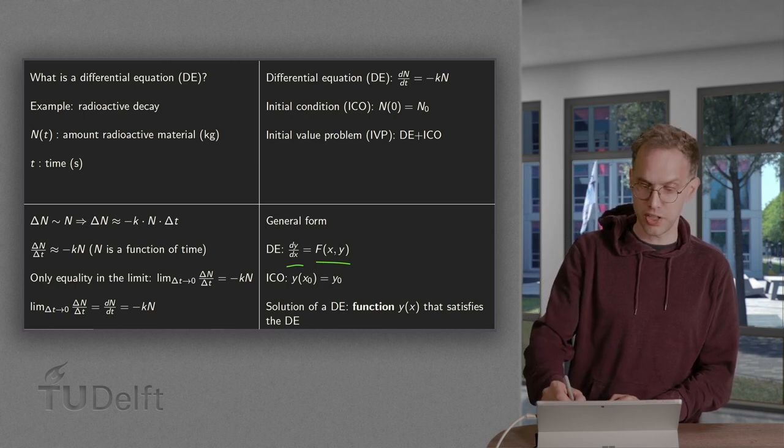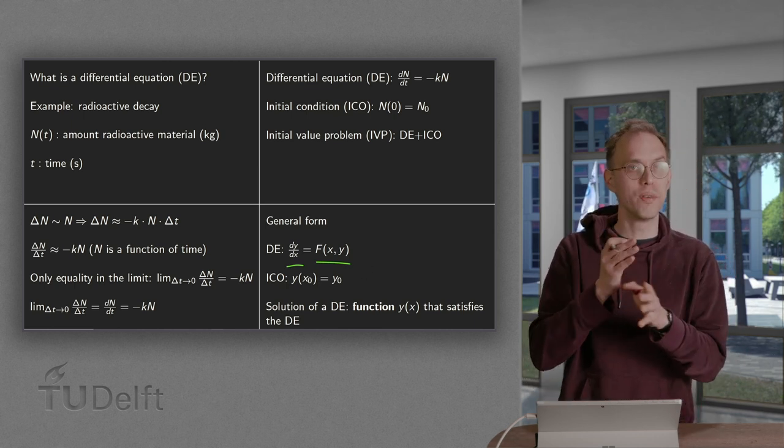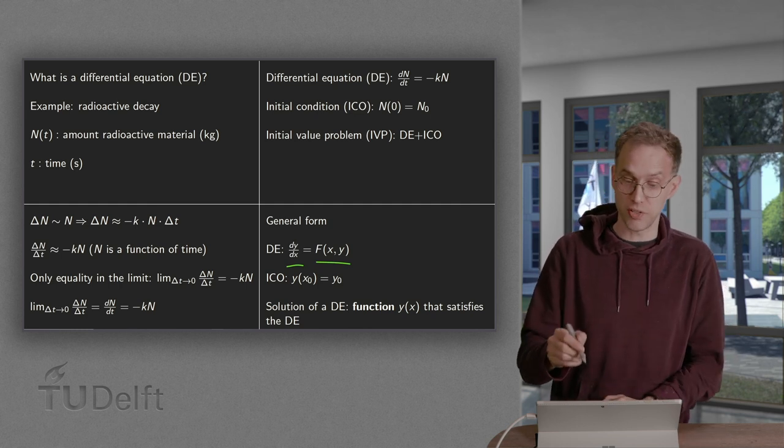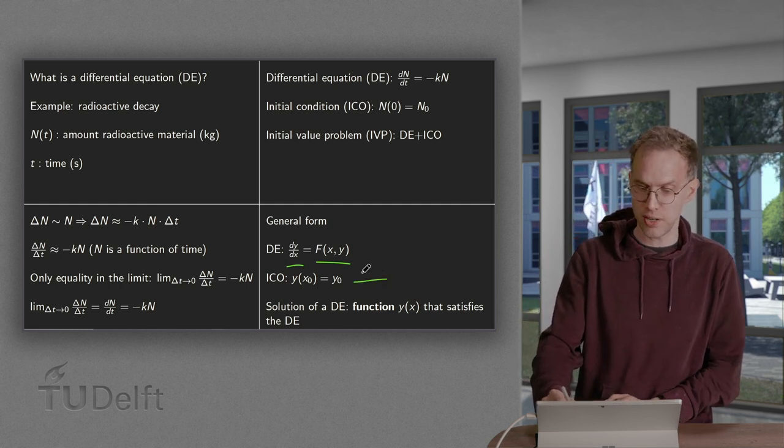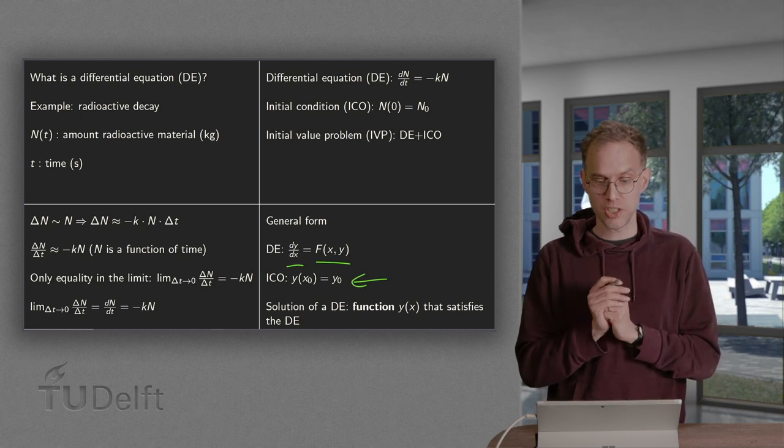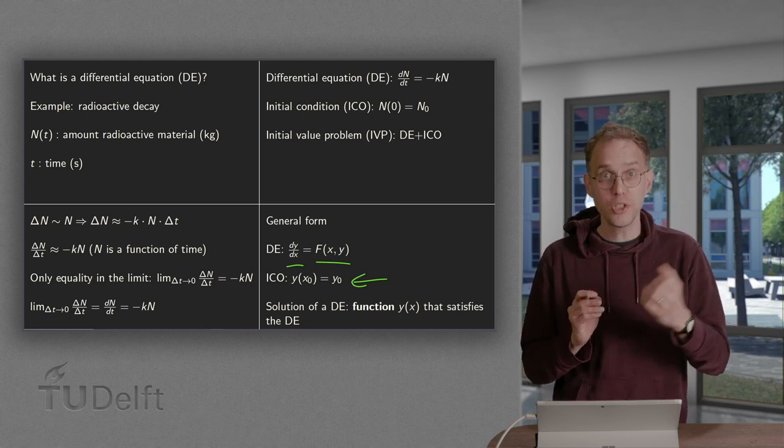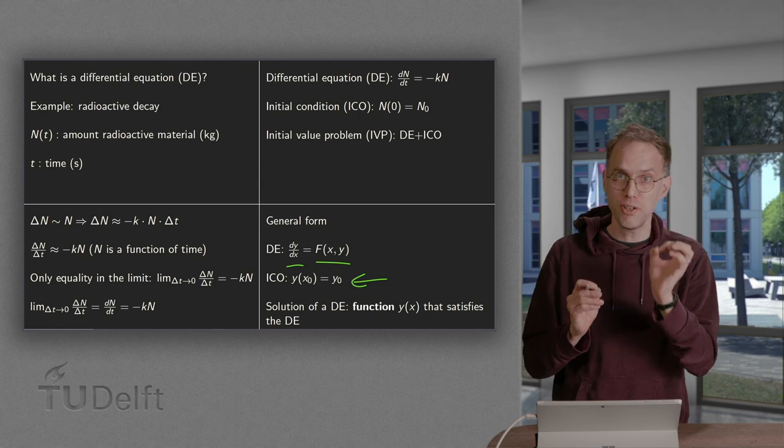And then an initial condition. And we specify at some instant, X equals zero or X equals X zero. We specify Y zero. So that will be our initial condition. And the solution we are looking for is a function Y of X.